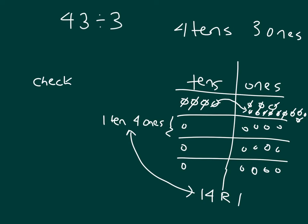How would we check our answer? Well, we're checking 14. We'll multiply it by 3. 3 times 4 is 12, regroup 1. 3 times 1 is 3, plus 1 is 4. And then what do we have to do with our remainder?